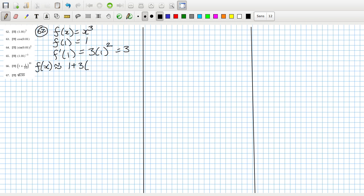So f of x is approximately 1 plus 3 times x minus 1. So f of 1.01 is approximately 1 plus 3 times 1.01 minus 1, which equals 1.03.